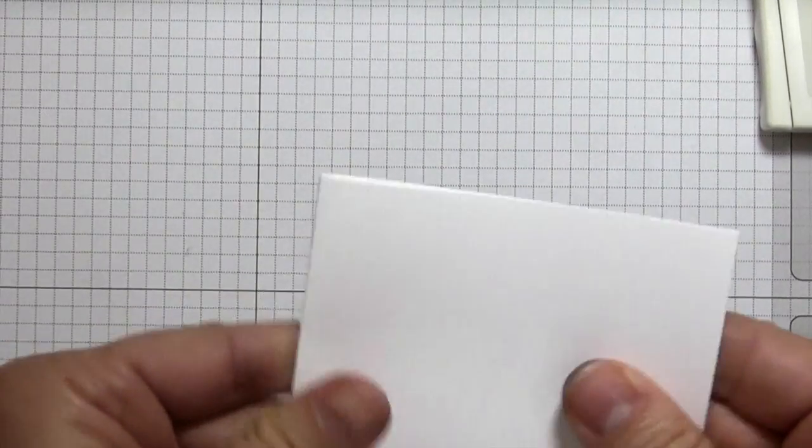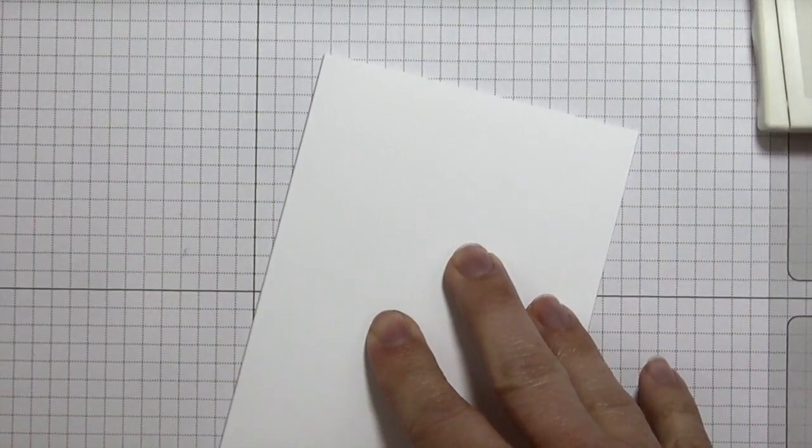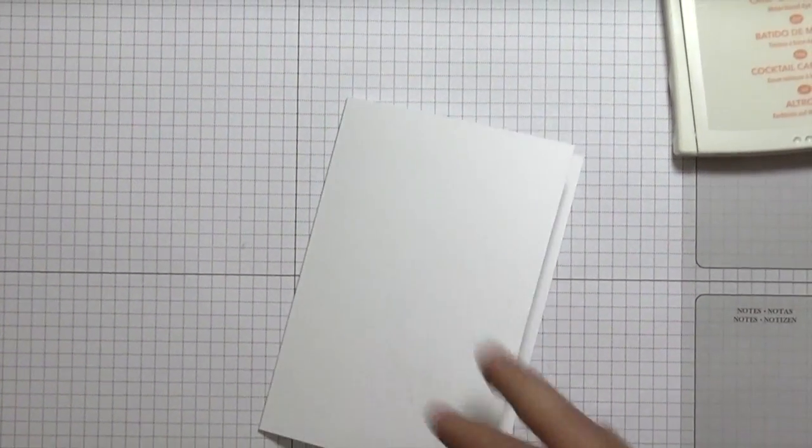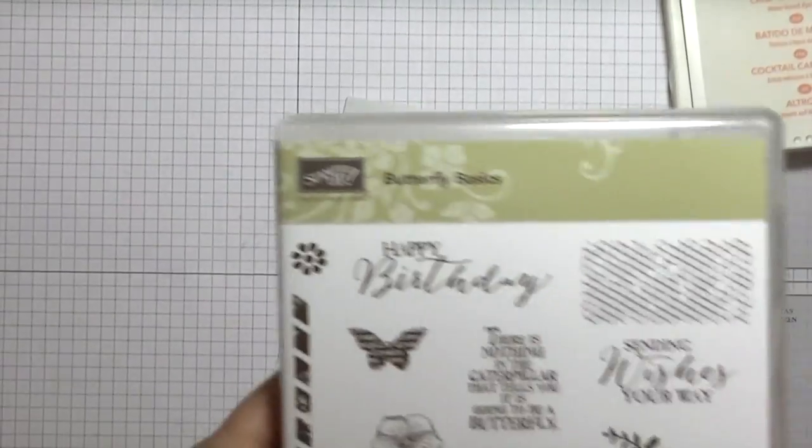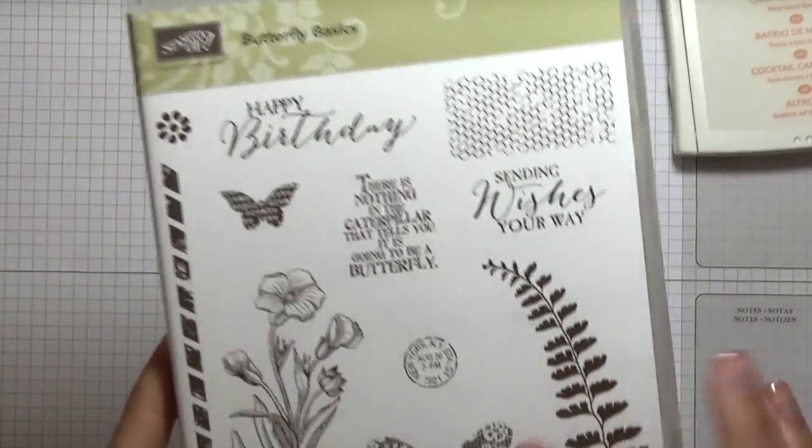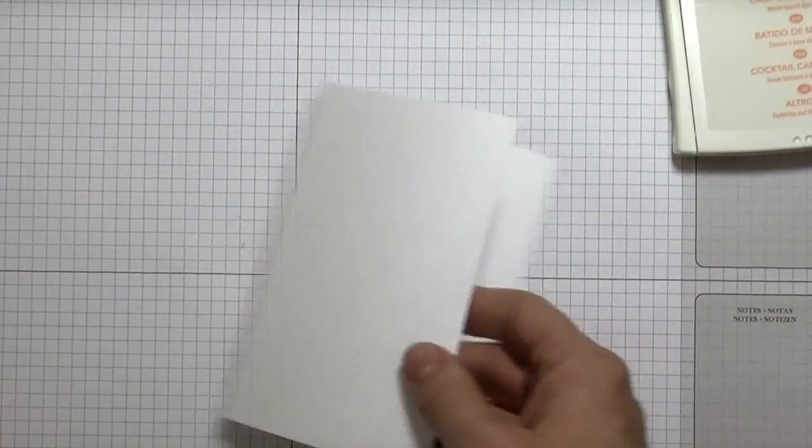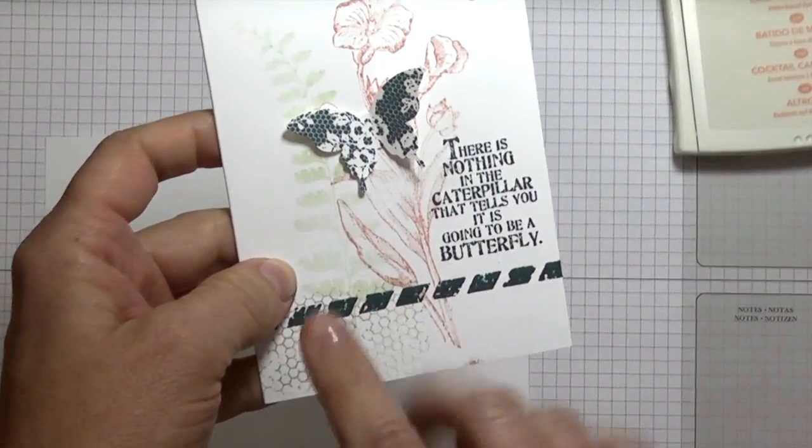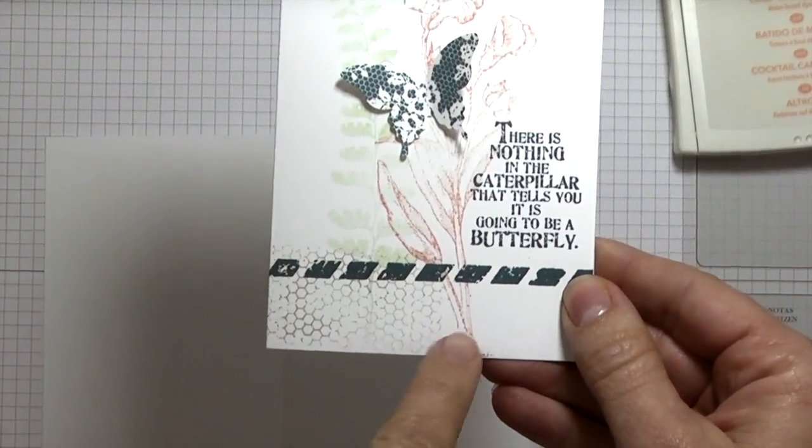We're using a note card size card. They already come cut and scored, so all you need to do is give it a good crease with your bone folder. We're going to be using quite a few of the stamps from the stamp set. The first thing you're going to need to do is, as you can see, I did a lot of layering, which gives it that collage effect.